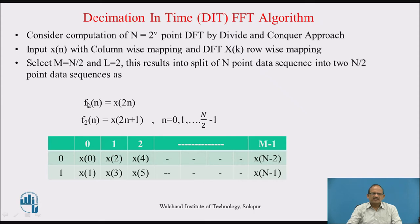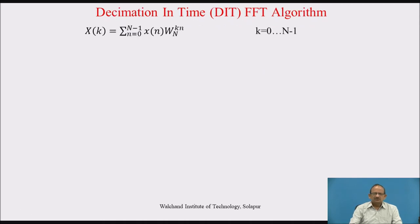With L equal to 0, the first row will have all even samples of x(n) and the second row will have all odd samples of x(n). Now let us consider X(k). As we know, X(k) is represented as the sum from n=0 to N-1 of x(n) W_N^(kn), where W_N is basically the twiddle factor which is e raised to minus j2π/N, and with k equal to 0 to N-1 this gives you N points of DFT X(k).